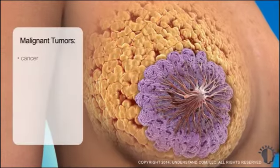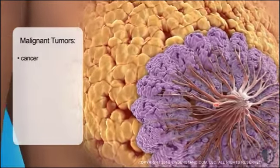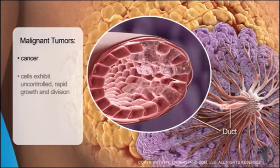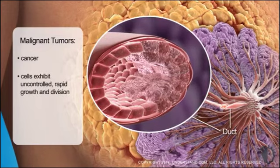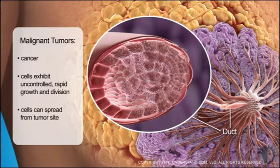Malignant tumors are cancer. These tumors are characterized by cells with uncontrolled, rapid growth and division that can spread from the tumor site and invade and harm other tissues.